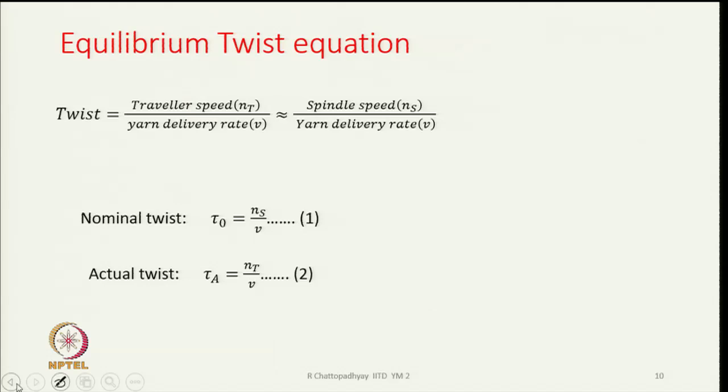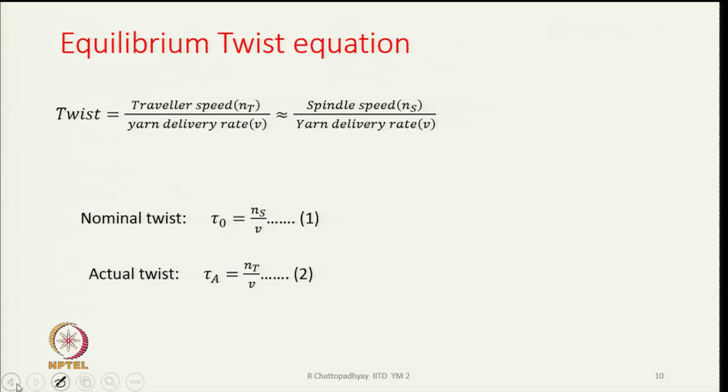The equilibrium twist equation gives twist as traveller speed divided by yarn delivery rate, which is approximately equal to spindle speed divided by yarn delivery rate. In practice, traveller speed is slightly less than spindle speed — practically the same but not exactly.